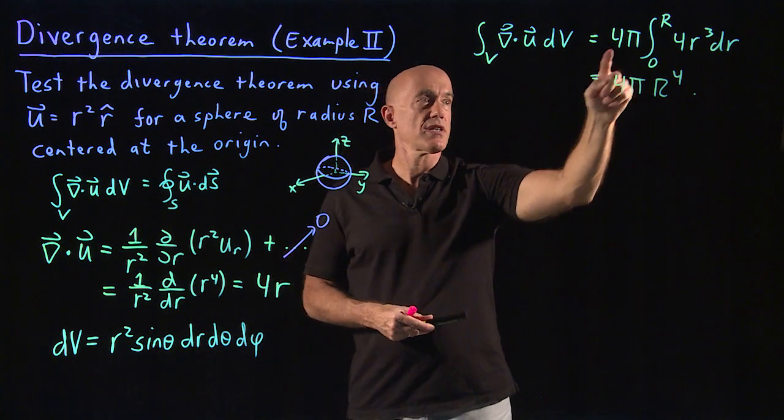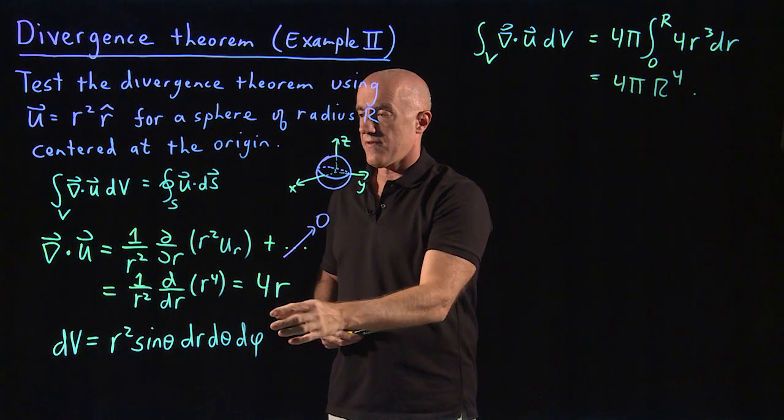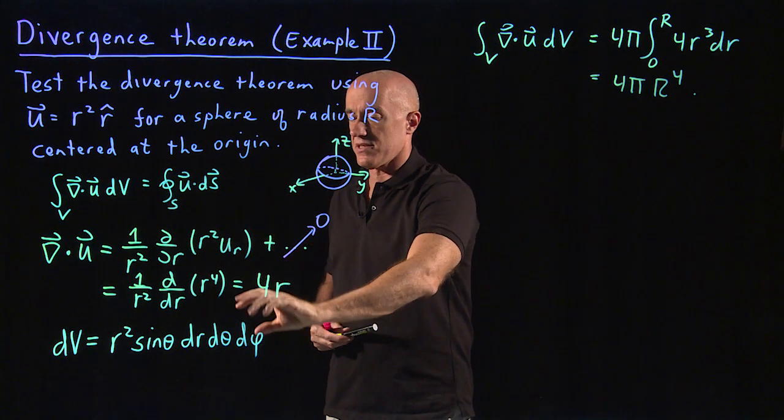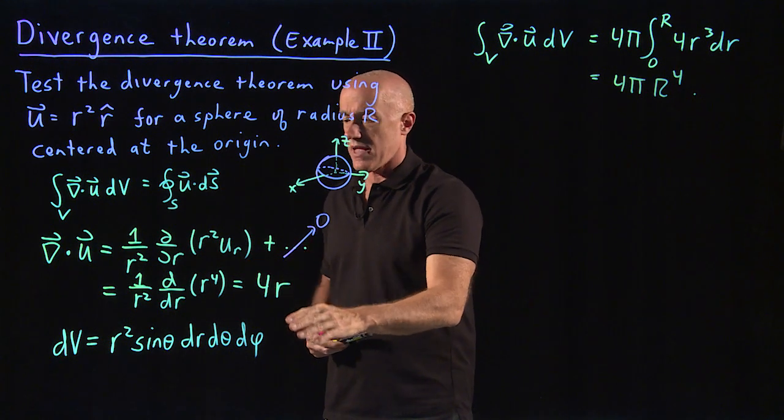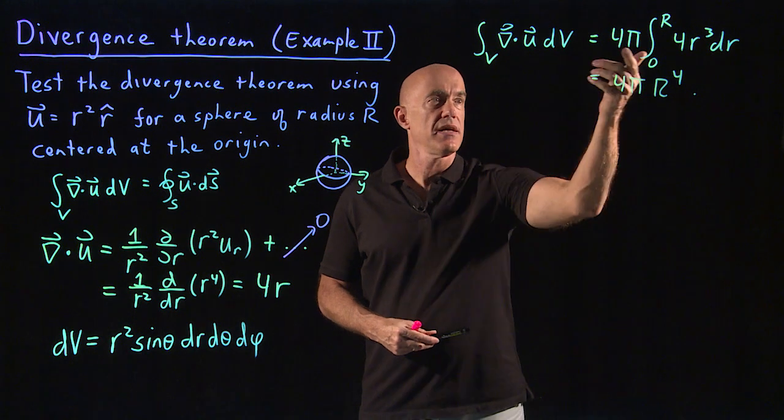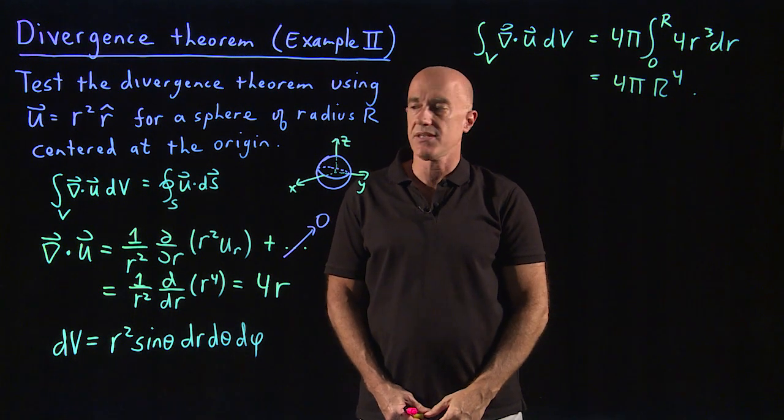So I did a shortcut here. I did the angular integration. If the function multiplying this only depends on r, which it does here, 4r, then you can do the angular integration immediately and get 4π. So that's the left-hand side.